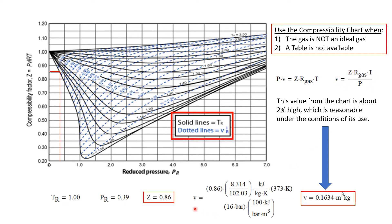Let's do that. Specific volume is Z, 0.86, times the gas constant for R134A, which is 8.314 divided by 102.03 kilojoules per kilogram K, times a temperature of 373 Kelvin divided by a pressure of 16 bar. And I have unit conversions to do. I need to convert bar cubic meters to 100 kilojoules. And a value of specific volume is 0.1634 cubic meters per kilogram.